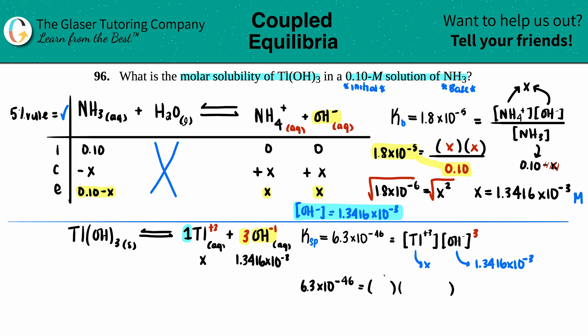We have x times (1.3416 × 10⁻³)³. So if I just quickly do that, 1.3416 × 10⁻³ cubed, okay, I'm just gonna erase this because I'm just simplifying, and it seems like I get 2.4147 × 10⁻⁹.